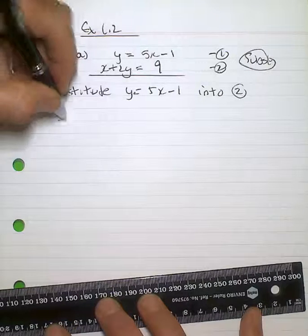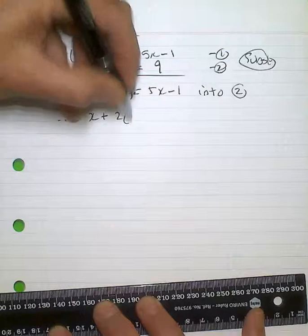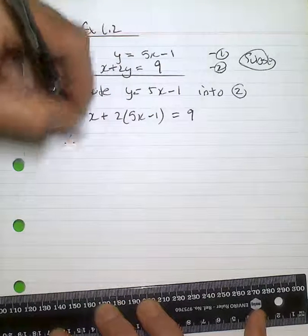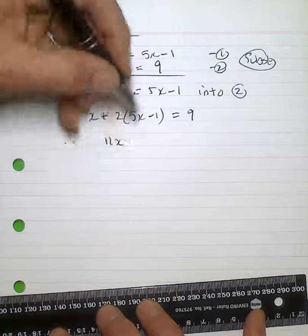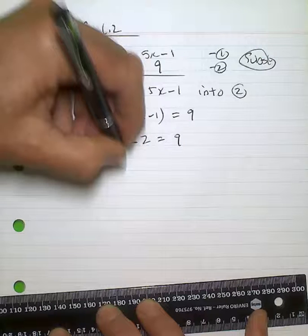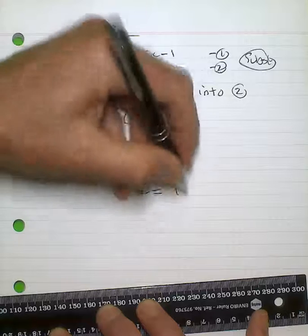If I do that, therefore, x + 2(5x - 1) = 9. 11x - 2 = 9. 11x = 11. Therefore, x = 1.